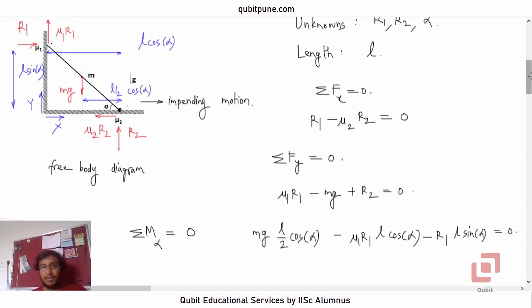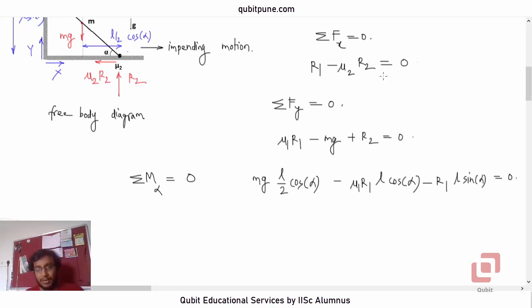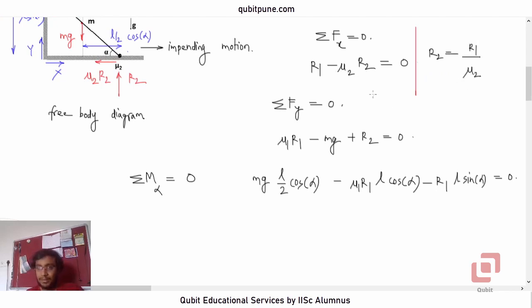We now have all three equations: R1 − μ2·R2 = 0; μ1·R1 − mg + R2 = 0; and the moment equation. We need to eliminate R1 and R2. From the first equation, R2 = R1/μ2. We substitute this expression for R2 into the second equation.